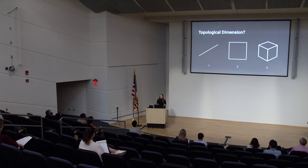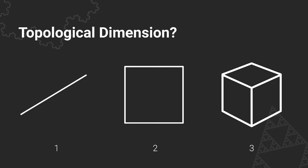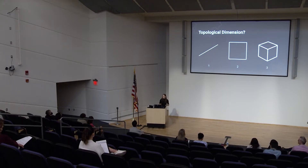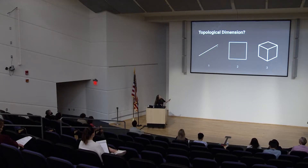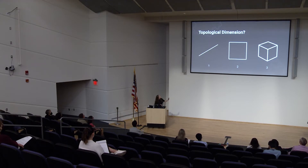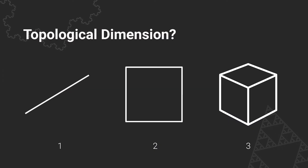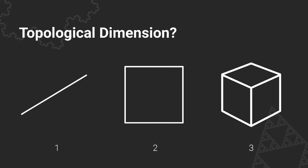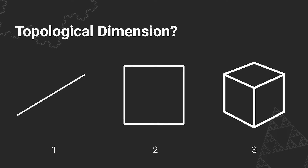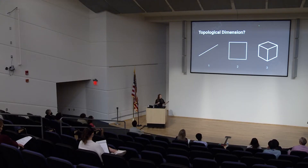After exploring self-similarity, let's explore topological dimensions — probably the dimensions you're all familiar with: 1D, 2D, 3D — a line, a square, and a cube. On a line there are two ways you can go: forward and backward. On a square there are two directions: length and width. On a cube: length, height, and width. Because there's only one way to move along the line, it has a topological dimension of 1. A square has topological dimension 2. A cube, topological dimension 3.